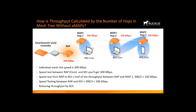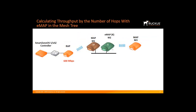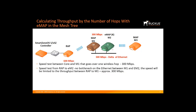Let's go through an example with an eMAP in the mesh tree. Suppose M1 and M2 are connected by Ethernet, so M2 becomes an eMAP AP. Running a speed test between the root AP and M1 over the wireless hop gives 300 Mbps. Going from the root AP to M2 — which is an eMAP — because there is an Ethernet connection between M1 and M2, there is no bottleneck on that link, so the speed is limited to the throughput between the root AP and M1, roughly 300 Mbps minus any delta on the Ethernet link.